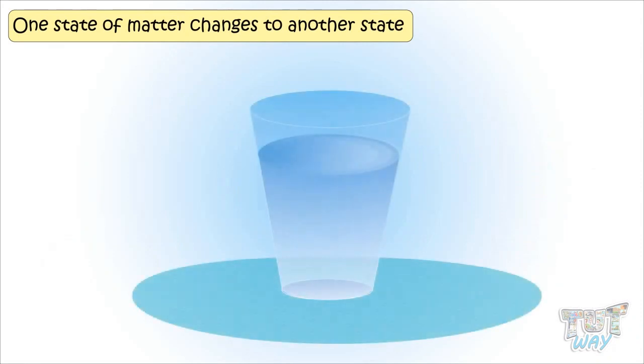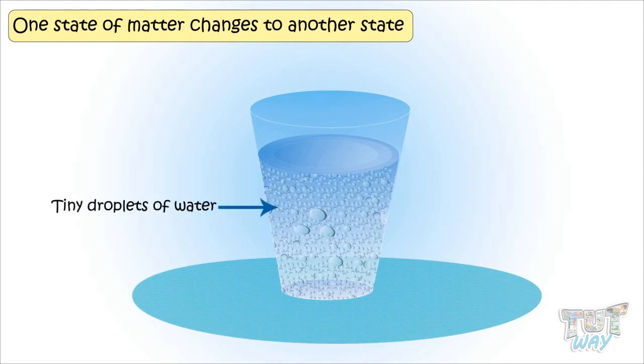Another easy experiment is, take a chilled glass of water or any drink you like. What you see after some time, there are tiny droplets of water outside the glass. How, and from where, do they appear?